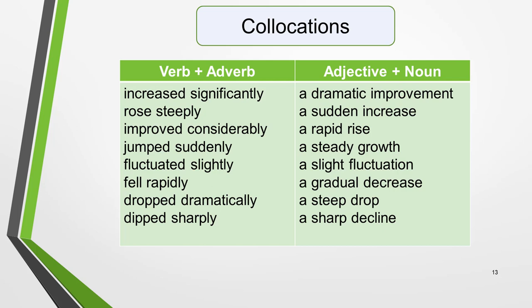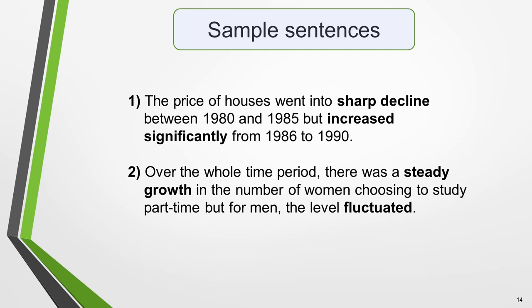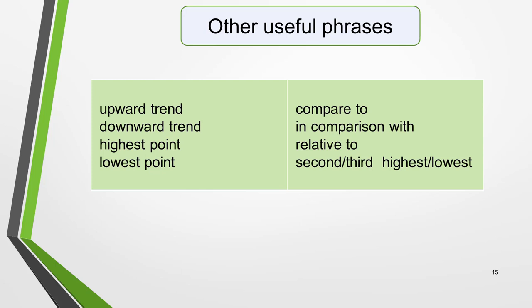Don't try to learn them all — just pick a couple you feel comfortable using. Here are some sentences to illustrate how you might use this vocabulary in your task 1 essay. One: 'The price of houses went into sharp decline between 1980 and 1985, but increased significantly from 1986 to 1990.' Two: 'Over the whole time period there was a steady growth in the number of women choosing to study part-time, but for men the level fluctuated.'